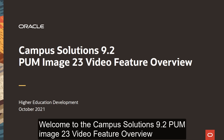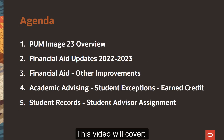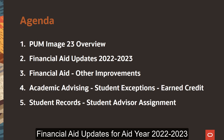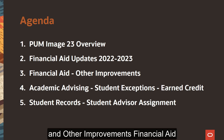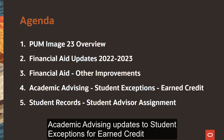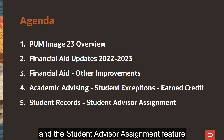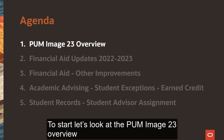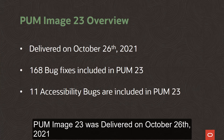Welcome to the Campus Solutions 9.2 PUM Image 23 Video Feature Overview. This video will cover the PUM Image 23 Overview, Financial Aid Updates for Aid Year 2022-2023, and other improvements to Financial Aid, Academic Advising Updates to Student Exceptions for Earned Credit, and the Student Advisor Assignment feature. PUM Image 23 was delivered on October 26, 2021.